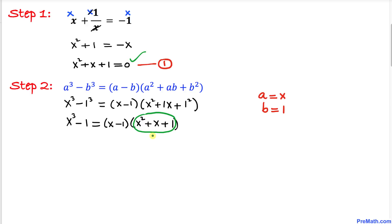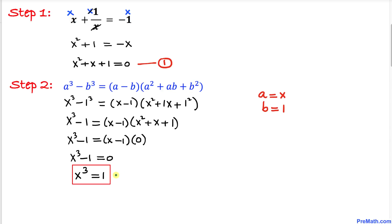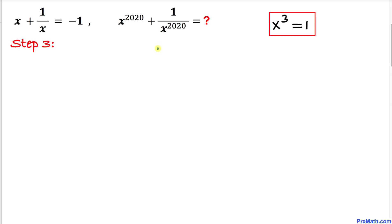We can see that the factor x squared plus x plus 1 equals 0 from equation 1. Replacing it with 0, the right hand side becomes x minus 1 times 0, which equals 0. So x cubed minus 1 equals 0, meaning x cubed equals 1.